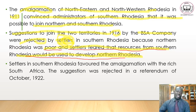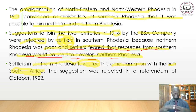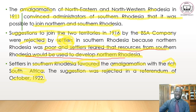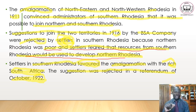The settlers in Southern Rhodesia preferred an amalgamation or federation with the richer South Africa instead. They wanted to join with South Africa, not Northern Rhodesia, since South Africa was richer. This suggestion was rejected in a referendum of October 1922 — through a vote, the people rejected joining with South Africa.